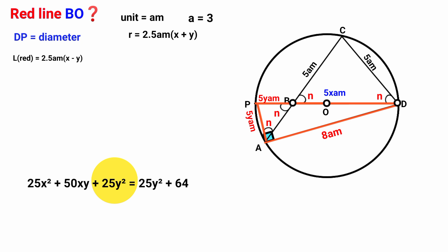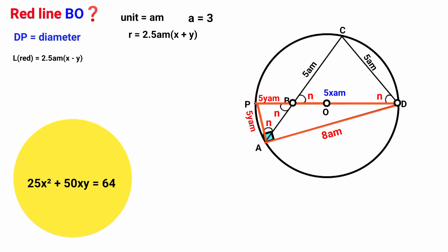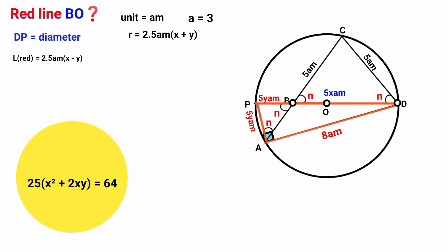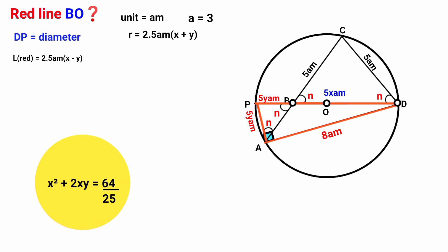This 25Y² on the left eliminates the 25Y² on the right. So 25X² + 50XY = 64. Since 50 equals 25 times 2, we have 25(X² + 2XY) = 64. Dividing both sides by 25: X² + 2XY = 64/25. We keep this aside.